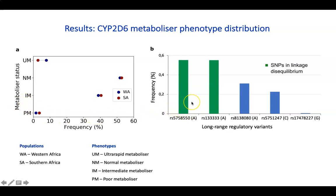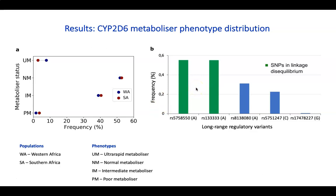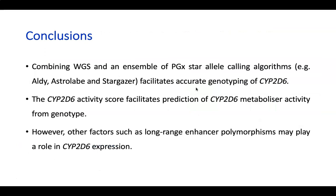We also looked at frequencies of long-range regulatory variants. Here we see two SNPs in linkage disequilibrium located about 100,000 base pairs away from the CYP2D6 gene. From GWAS studies there is evidence that they regulate CYP2D6 gene expression, meaning it is not sufficient to genotype CYP2D6 alone — we also need to look at regulatory variants, as they can impact the phenotype.